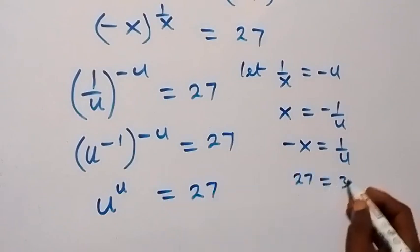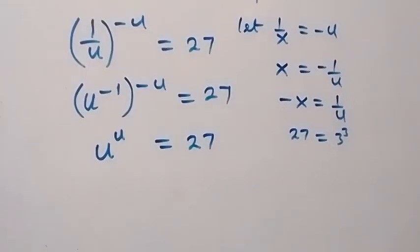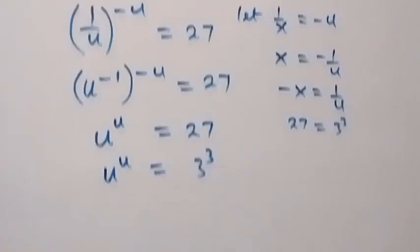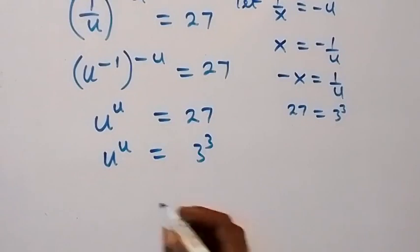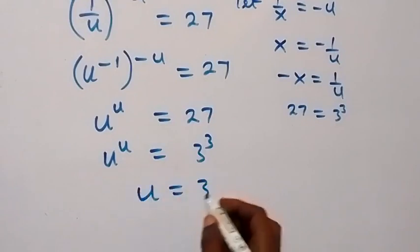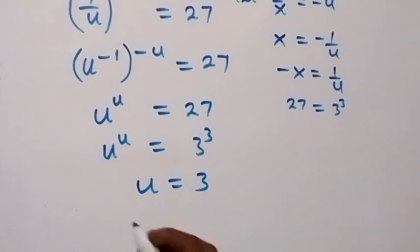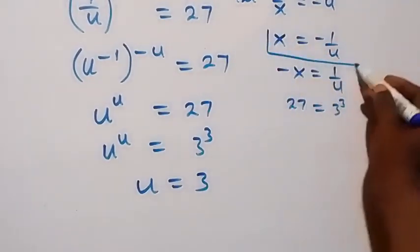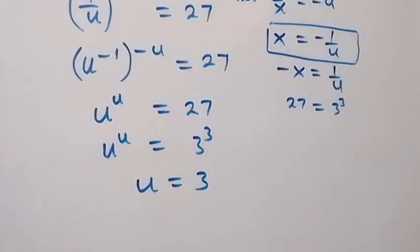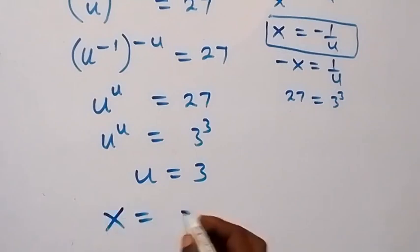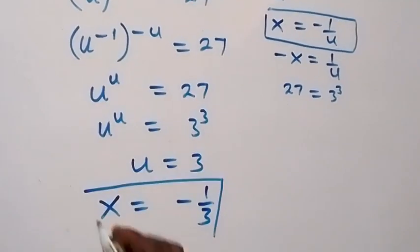27 is the same as 3 raised to power 3, so we have u raised to power u equals to 3 raised to power 3. Comparing both sides, we get u equals to 3. Since x equals to minus 1 over u, we have the value of x as minus 1 over 3.